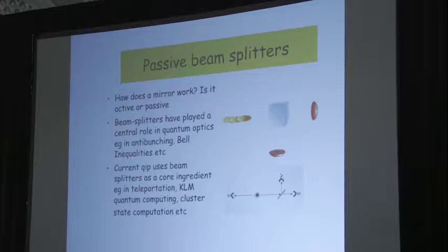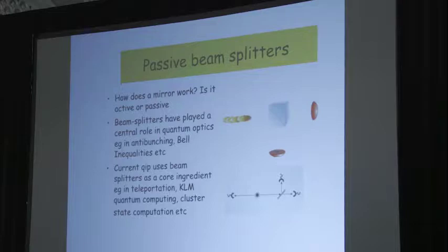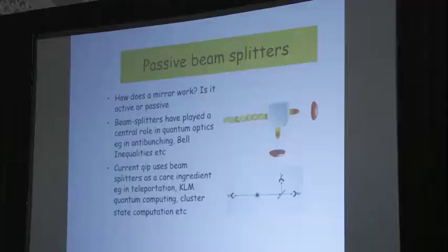So passive beam splitters. How does a mirror work? Mirror's made of stuff, and stuff's described by quantum mechanics. How could you have a passive beam splitter? It's made of stuff. Why isn't the stuff described by quantum mechanics? And yet beam splitters are an integral part of everything we do. We never ever consider them to be active, or at least we hadn't until a while ago.